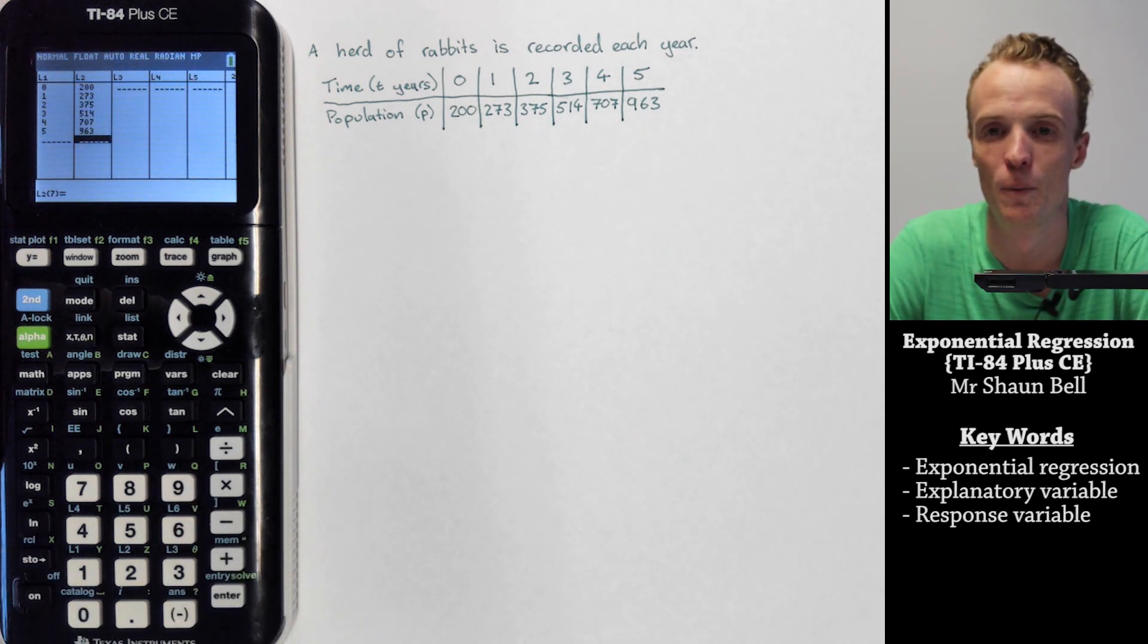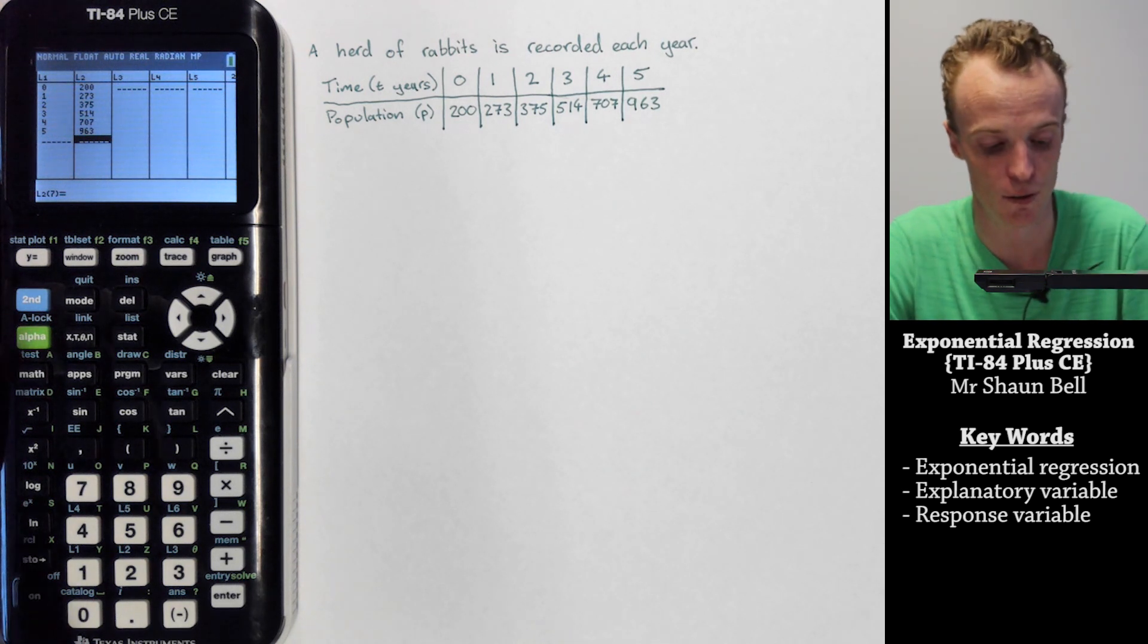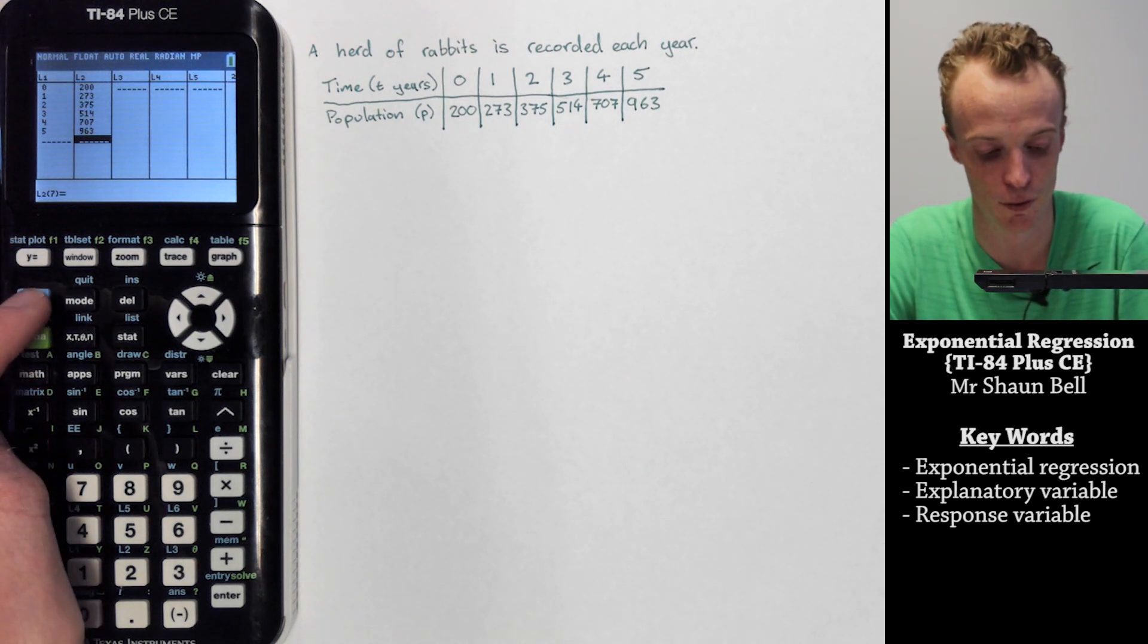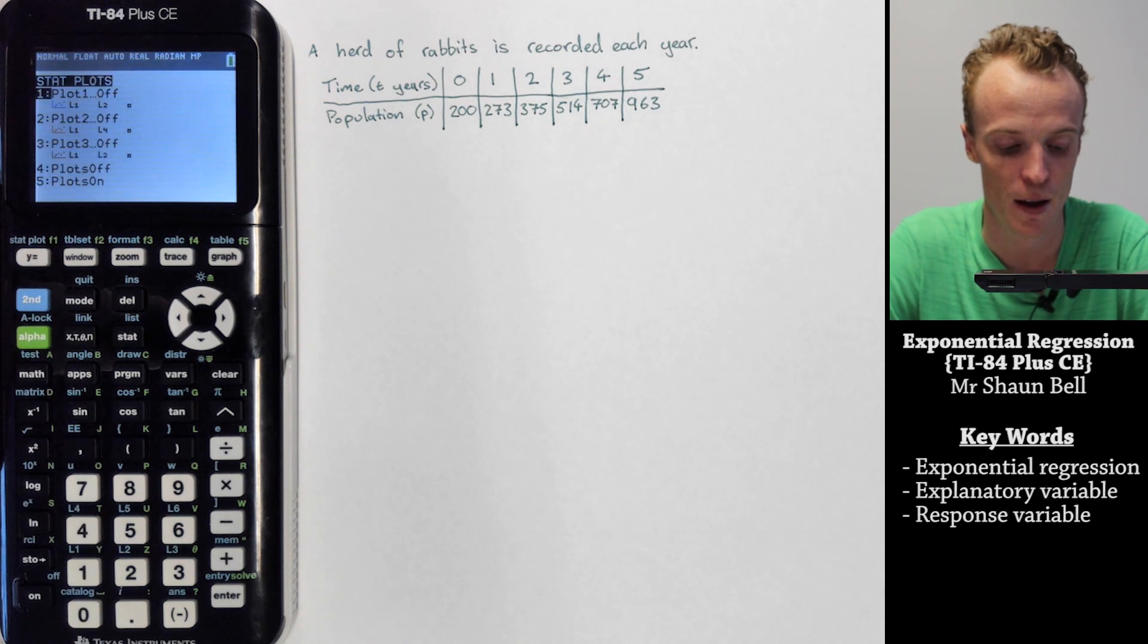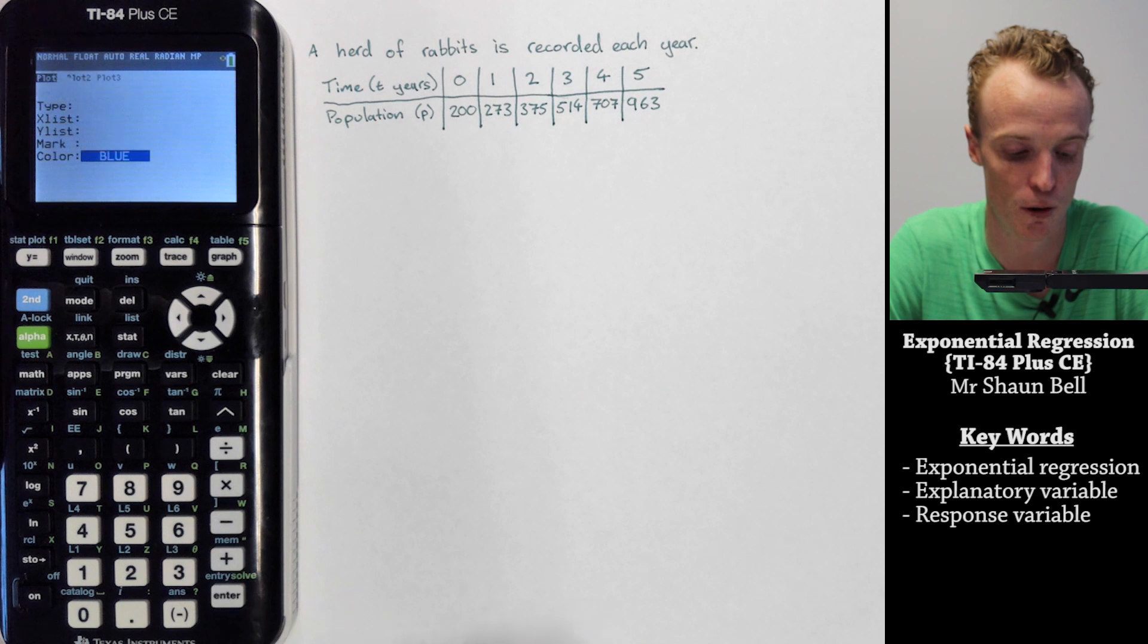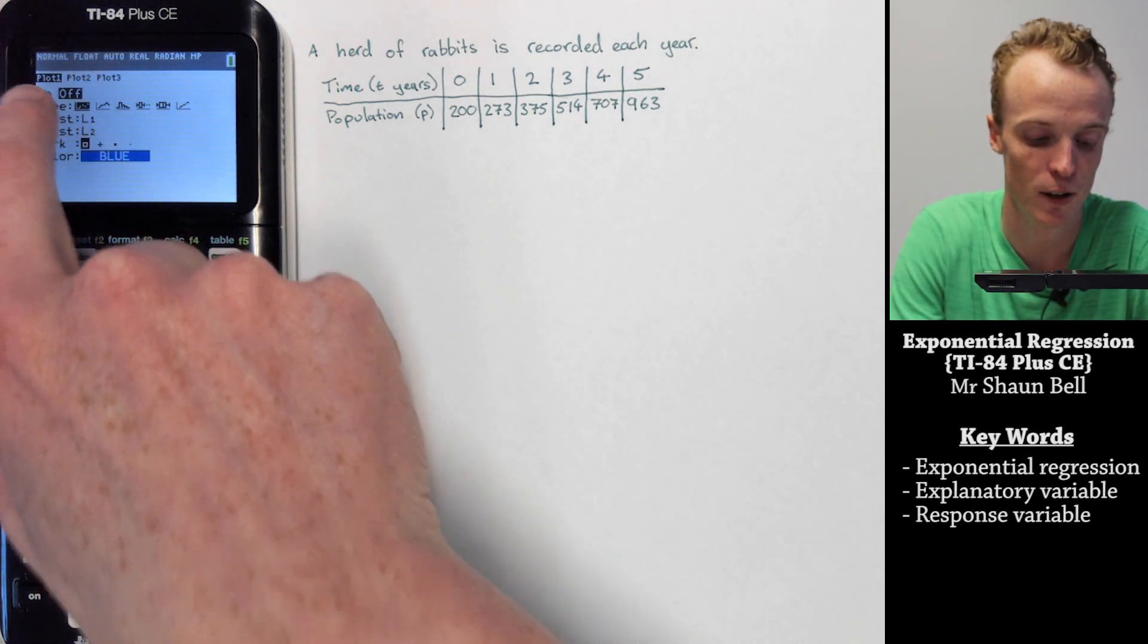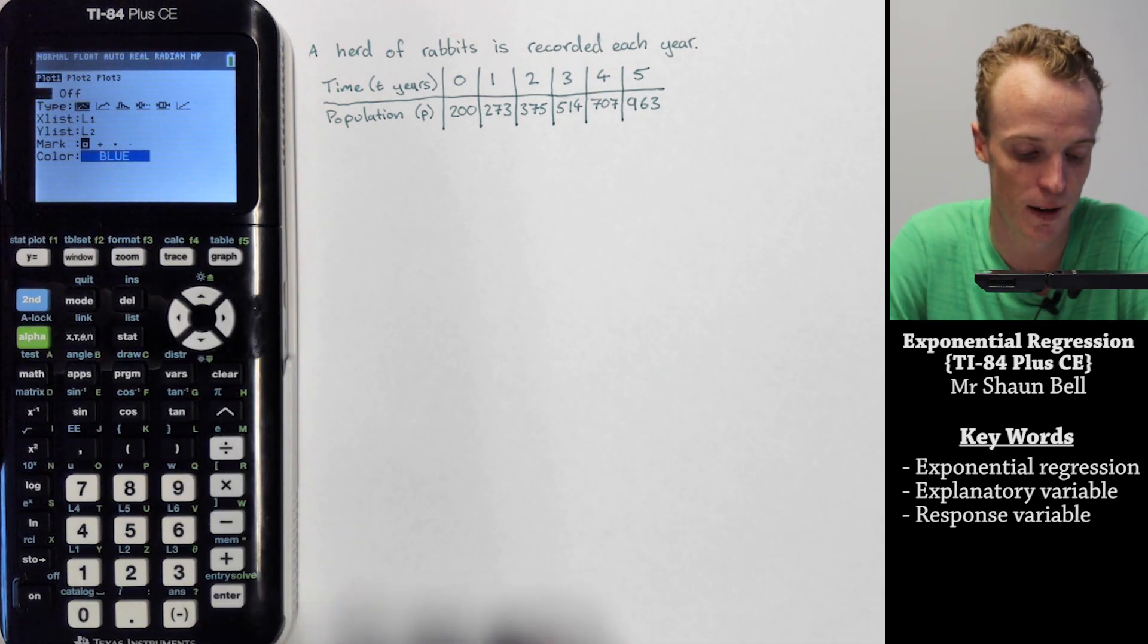Once we've done that we might want to graph this. To graph this we need to go to the stat plot section, so we go second stat plot and we need to turn on one of these stat plots. Let's press enter on plot 1 and make sure it's highlighting on, and hit enter.